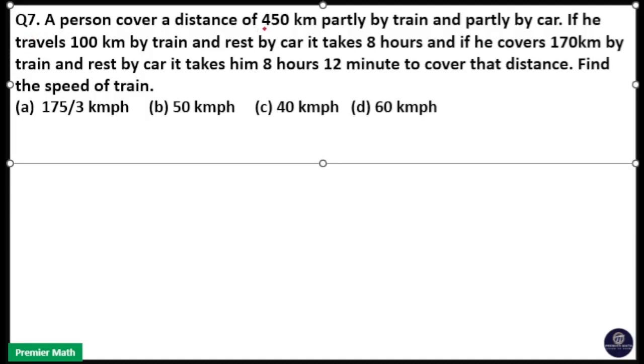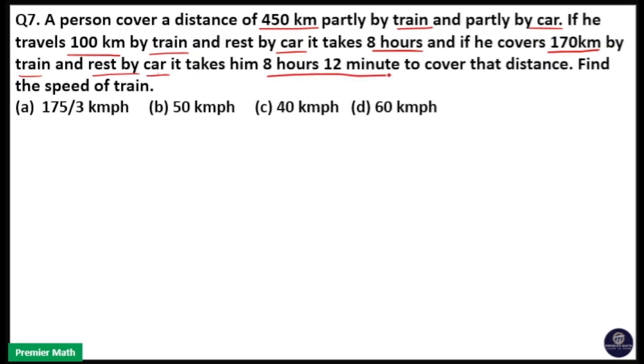A person covers a distance of 450 km partly by train and partly by car. If he travels 100 km by train and rest by car it takes 8 hours, and if he covers 170 km by train and rest by car it takes 8 hours 12 minutes to cover that distance. Find the speed of train.